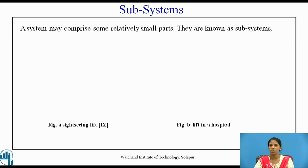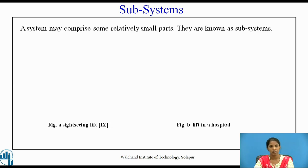Now let us see what subsystems are. A subsystem may comprise some relatively small parts and they are known as subsystems. Before going to subsystems, let us understand what a system is. For example, a switch used to light a bulb is known as a simple system.